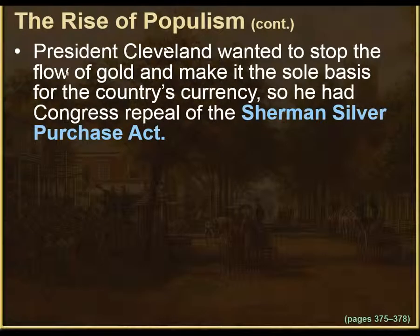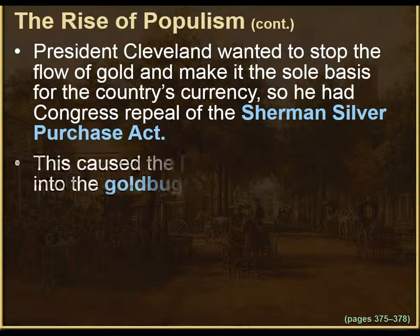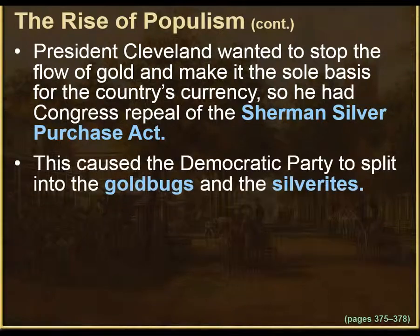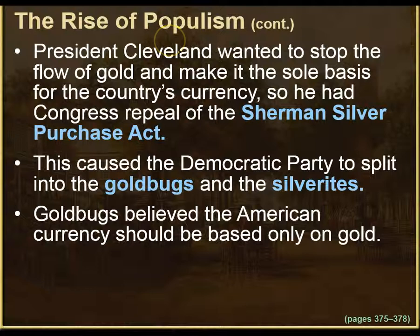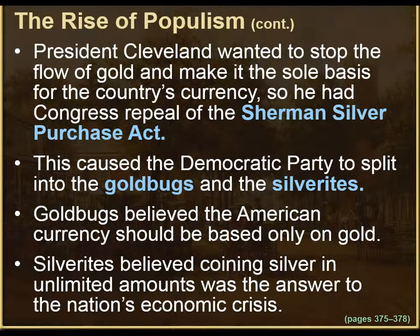President Cleveland wanted to stop the flow of gold and make it the sole basis for the country's currency. Congress repealed the Sherman Silver Purchase Act. This caused the Democratic Party to split into the gold bugs and the silverites. Gold bugs believed American currency should be based only on gold, while silverites believed coining silver in unlimited amounts was the answer to the nation's economic crisis.